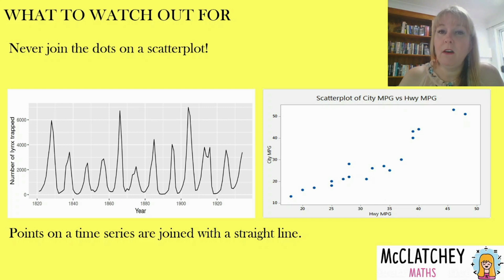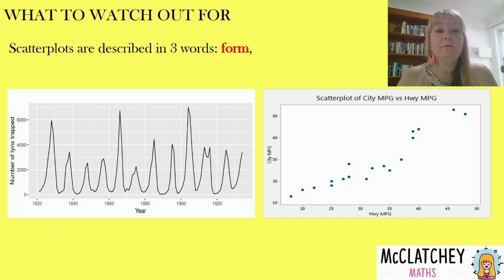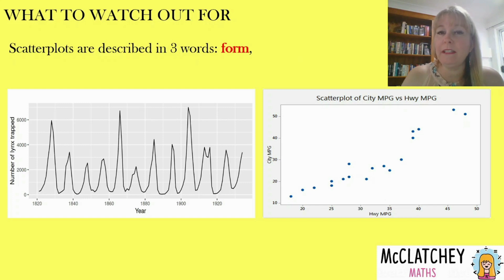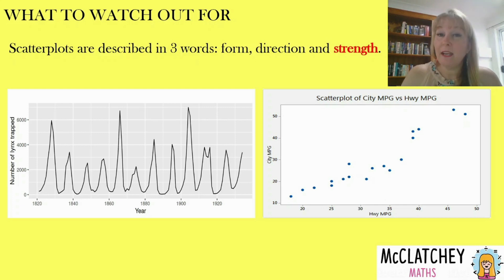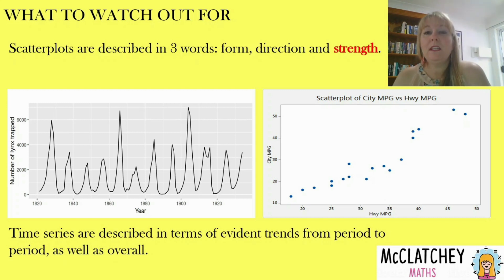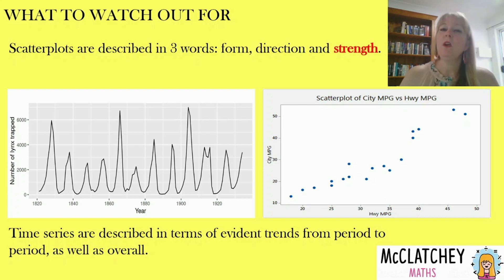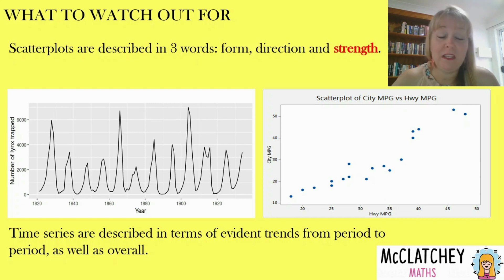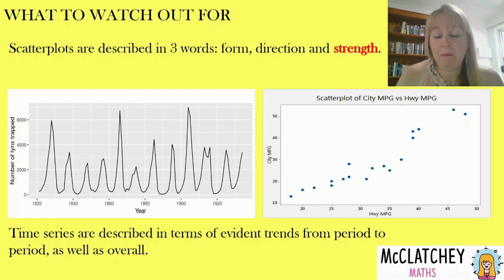Points on a time series are joined with a straight line — you can see the joins between all the different data points, and that's how we look for trends. Remember that scatter plots are always described using three words: form (linear or non-linear), direction (positive or negative), and strength (strong, weak, moderate, or perfect correlation). But for a time series, we need to tell a story — describe the evident trends from period to period as well as the overall trend. I see students try to describe a time series by just saying it's positive, linear, and moderate strength. Remember the difference: three words for a scatter plot, tell a story for a time series.